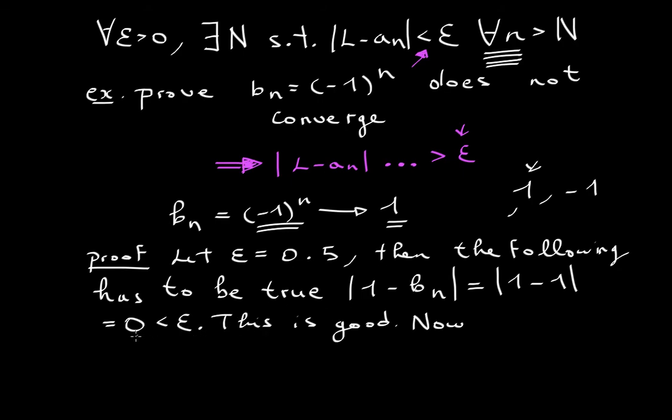Now let n be odd. Then this would imply that our limit minus our sequence should be less than epsilon. Let's simplify this. Since n is odd, we will have negative one now. So 1 minus (-1). We know that a negative becomes a positive, so 1 plus 1 is 2, and the absolute value of 2 is just 2.